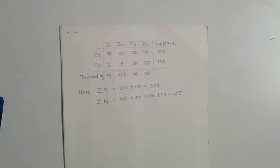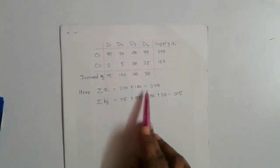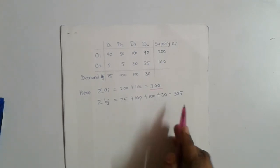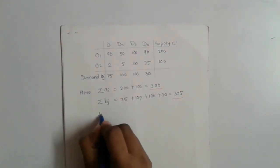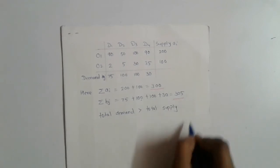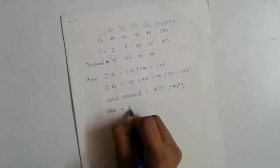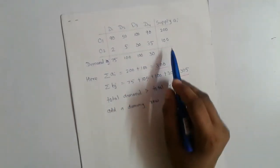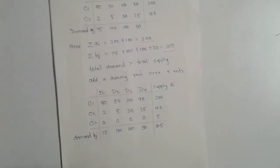Consider this second example: in this transportation problem the total supply is 200 plus 100 equals 300, and the total demand is 75 plus 100 plus 100 plus 30 equals 305. That is, the total demand is greater than the total supply by 5 units. So we add a dummy row having transportation cost zero and supply of 5 units, and the problem becomes balanced — total demand equals total supply equals 305.